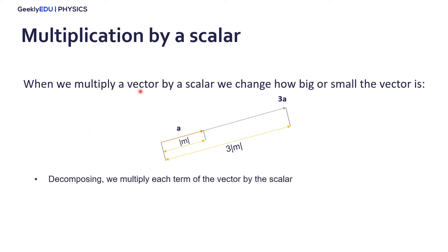We can also decompose the vector and multiply each term of the vector by the scalar. So, we have vector a, 3 and 5. If we want 3a, we just multiply 3 times 3 and then 3 times 5. We multiply each component by 3. And we have vector 3a of 9 in the x-direction and 15 in the y-direction.